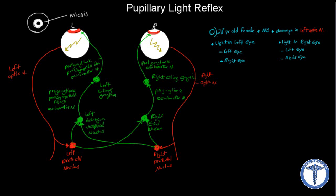Here's an example. We have a 28-year-old female who suffers from MS, and she has damage in her left optic nerve. The question is asking: what are the results if we shine the light into the patient's left eye? What is going to happen to the left eye and the right eye? And what if we shine the light into the patient's right eye? What are the results going to be in each eye, and why?